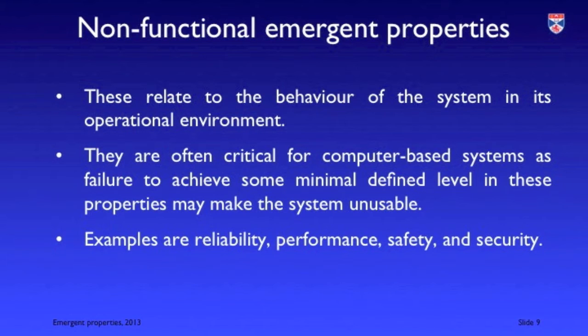Non-functional emergent properties relate to the behaviour of the system rather than its functionality. The 'ilities' — dependability, security, safety, usability, reliability and so on — are all non-functional emergent properties. These are often particularly important for critical systems, because if a system does not reach the right level of reliability, it may be completely useless and unable to be deployed as intended, even if it is functionally correct.